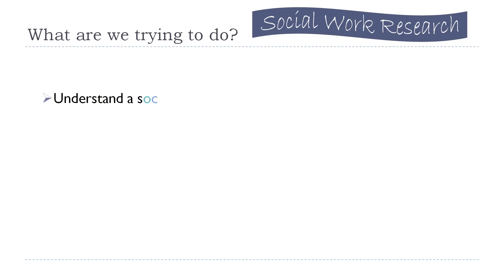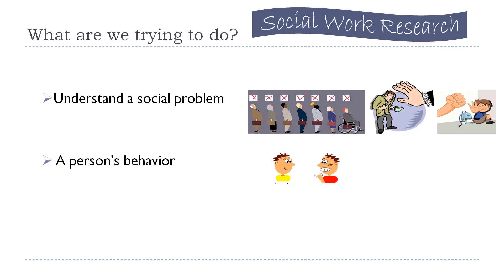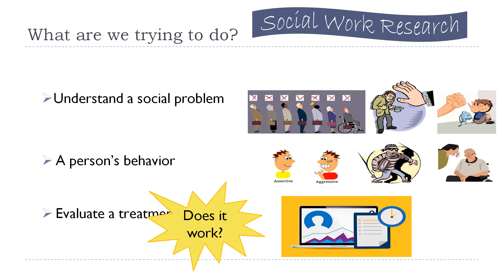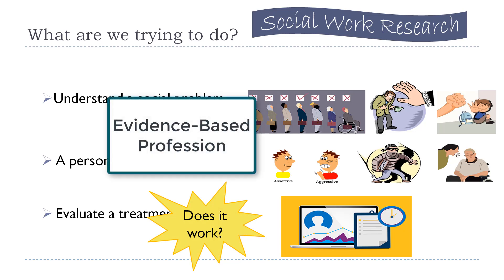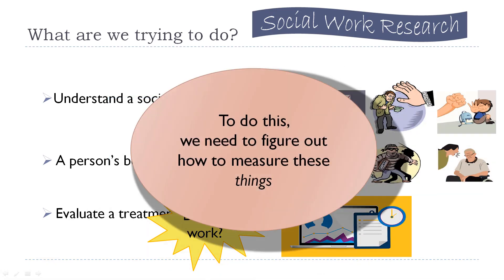In social work, we're interested in social problems and addressing them. Social work research can be about understanding a particular social problem like discrimination, poverty, or child abuse. We may also be trying to understand people's behaviors — what makes someone assertive versus aggressive, or why do some people engage in crime. In some cases we're trying to evaluate a treatment, intervention, program, or policy — really asking, does it work? Social work is an evidence-based profession, meaning we use research to evaluate our programs, treatments, and practices.